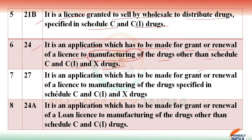The next one is Form Number 27. It is an application which has to be made for grant or renewal of a license for manufacturing of drugs specified in Schedule C, C1, and X drugs.